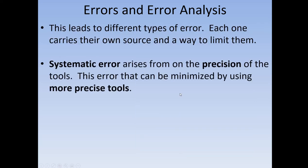Now, there are a bunch of different types of error, and you have to understand all of them — you have to know what causes them and how to limit them. The first type of error we want to talk about is systematic error. Systematic error comes from the precision of our tools, and basically the only real way to limit this is by using more precise tools. There's no real way to get rid of systematic error — all it does is transfer the error to some other place.